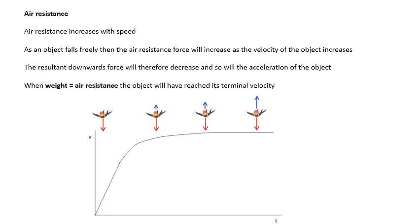The resultant force, which is the weight minus the air resistance, will decrease, and so the acceleration of the object will decrease, until eventually the acceleration will be zero, and it will have reached a terminal velocity. When the weight equals the air resistance, the object will have reached its terminal velocity. You may be asked this. I know it's GCSE, but you may be asked to show that you understand this.